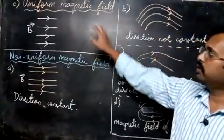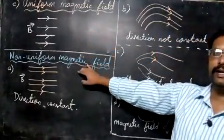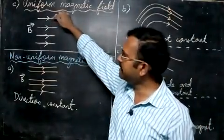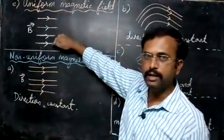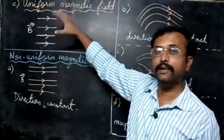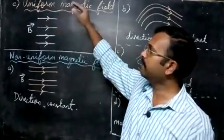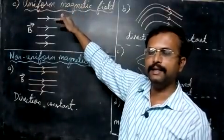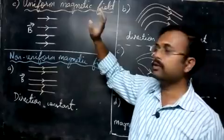Let us now study about the uniform magnetic field and non-uniform magnetic field. Uniform magnetic field means the magnetic fields are all parallel to each other and they are in the same direction. So if the magnetic fields are parallel and in the same direction, we can say they are uniform magnetic field.